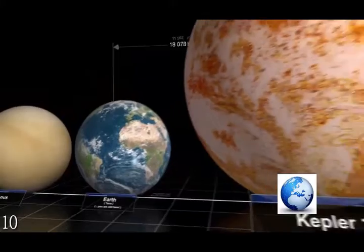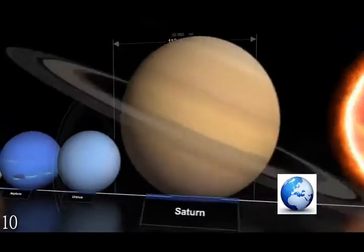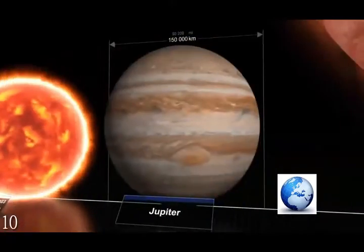After us, we are dwarfed by Neptune, Saturn, Jupiter, and our own star, which is 93 million miles away from us, the Sun.